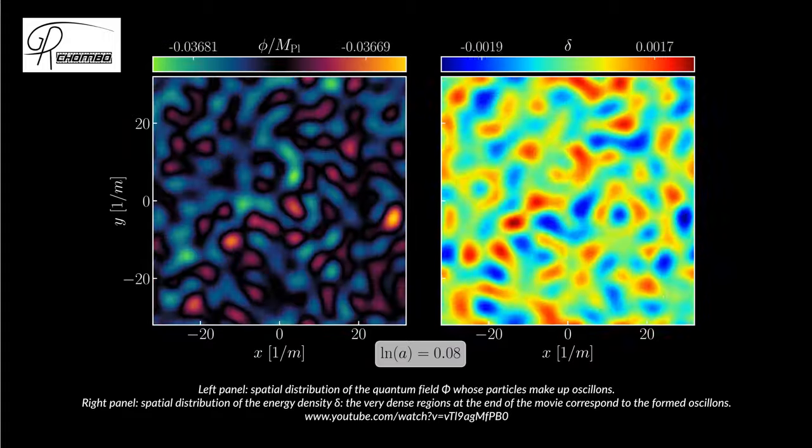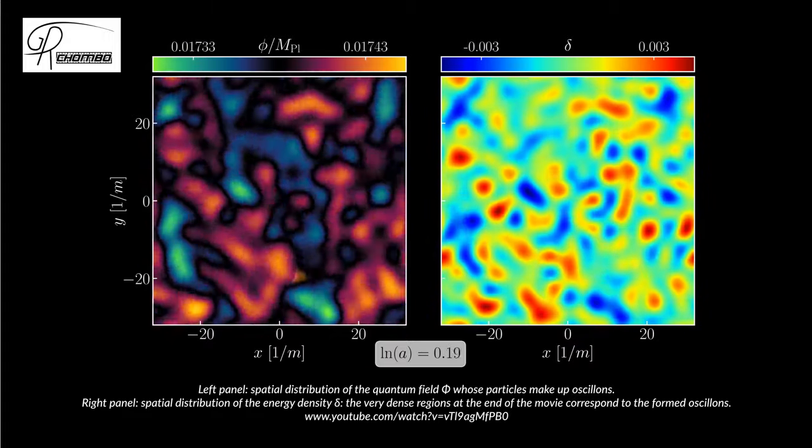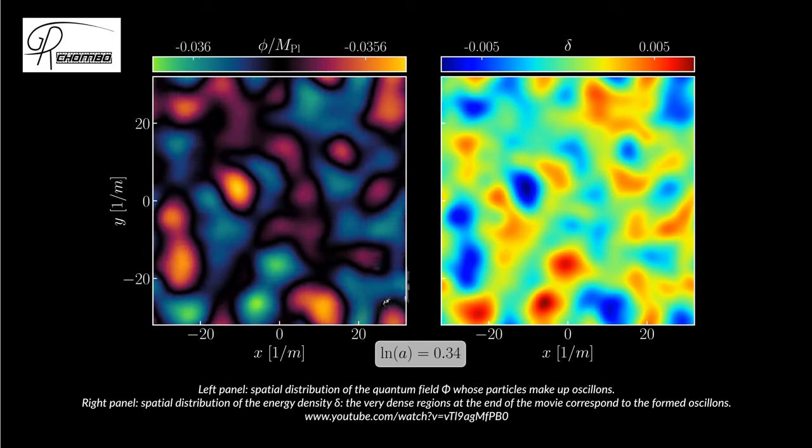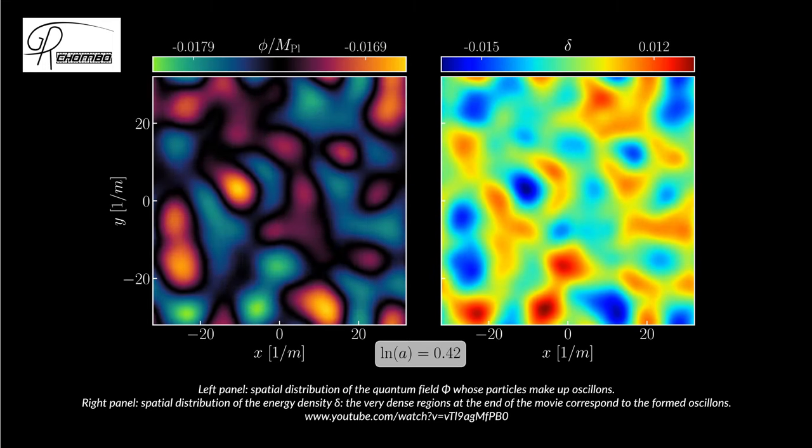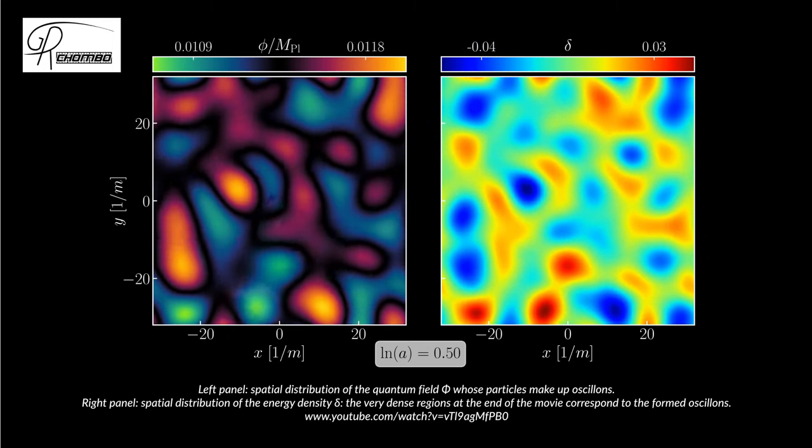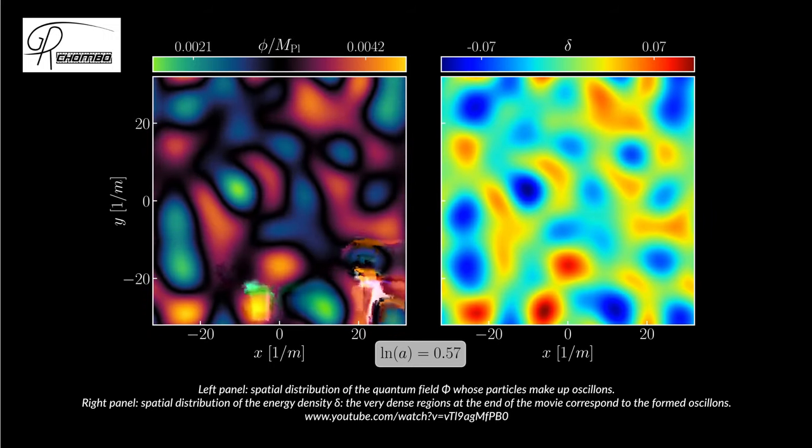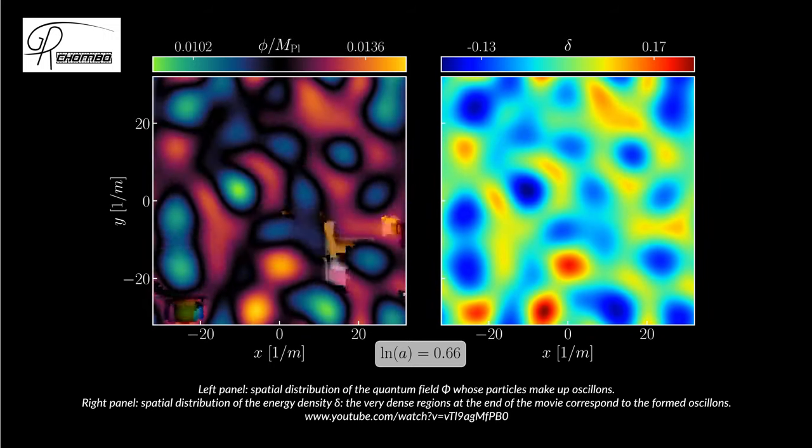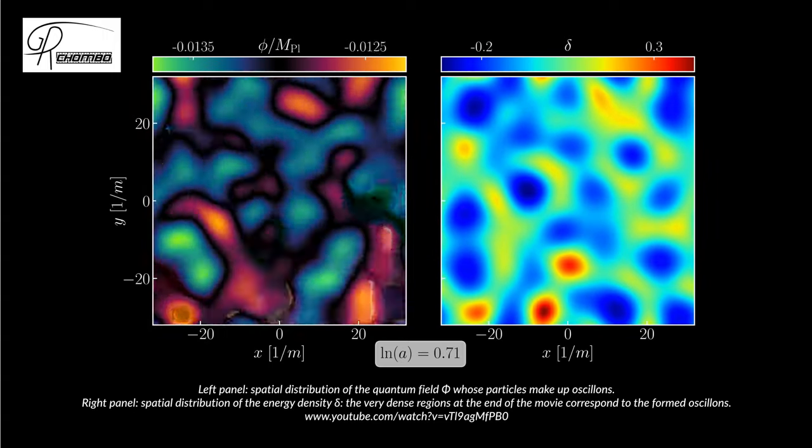Some potential explanations predict the existence of very dense, star-like objects called oscillons, whose dynamics would produce a constant background buzz of ultra-high-frequency gravitational waves, providing another tantalizing target for detectors operating in this frequency range.